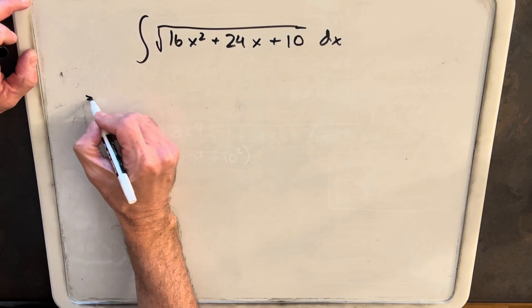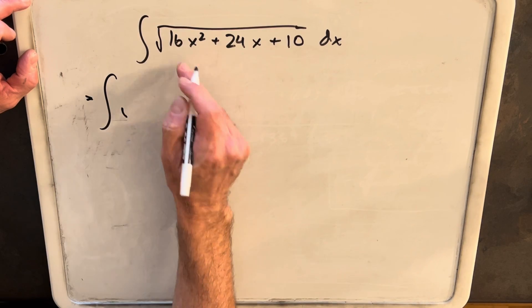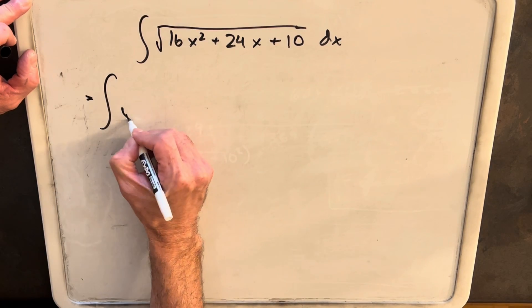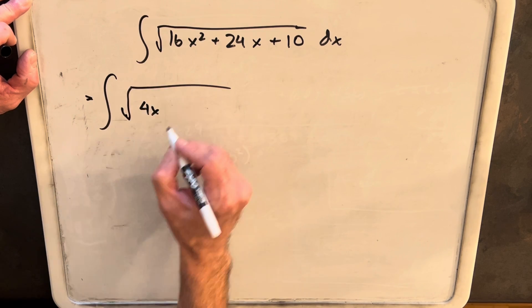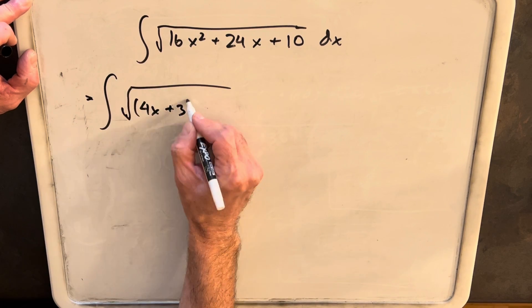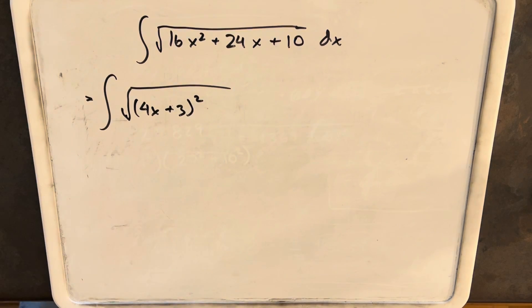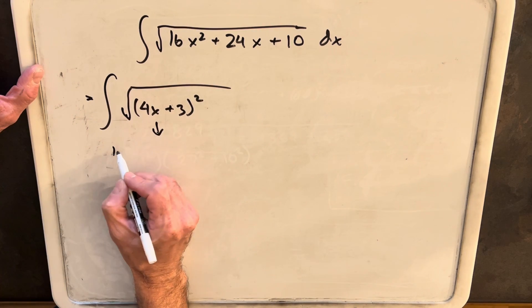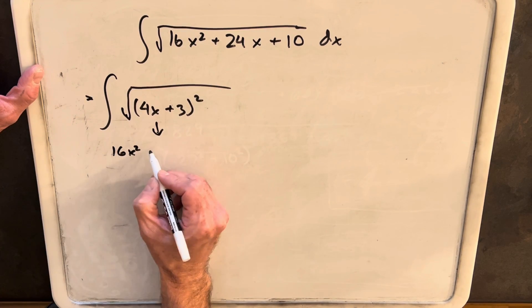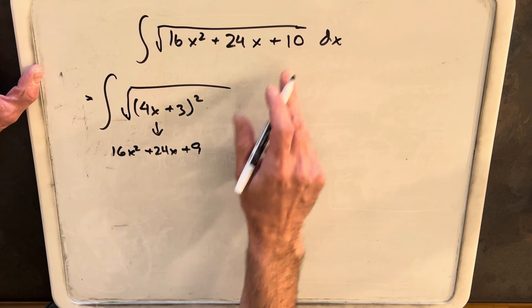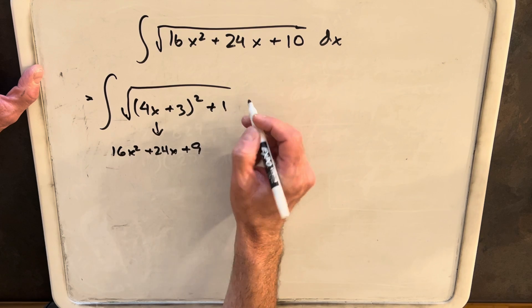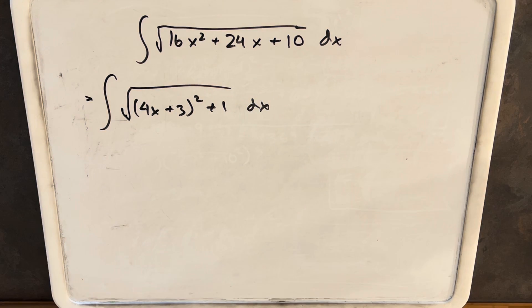So what I'm going to do is let's rewrite this. We have 16 is a perfect square, so we're going to rewrite that part. We'll rewrite 4x plus 3 squared. Then if you just multiply that out, you notice that that's going to be 16x squared plus 24x plus 9. Close, so what we need is we need an extra 1 in order to have the same expression here.